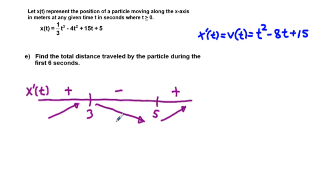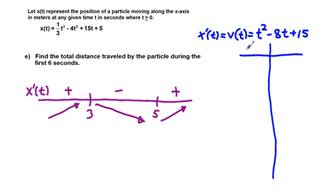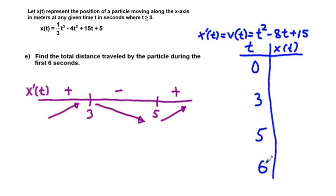For part E, we find the total distance traveled during the first 6 seconds. We need the position at each critical number during the first 6 seconds. We make a table with t and x of t, listing the key values: the starting point t equals 0, the critical numbers t equals 3 and t equals 5, and the endpoint t equals 6.